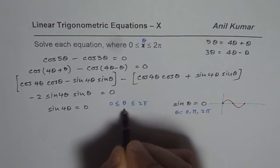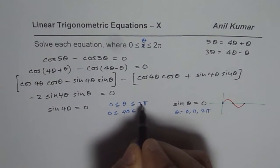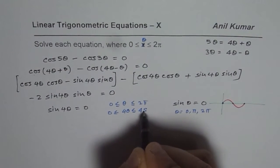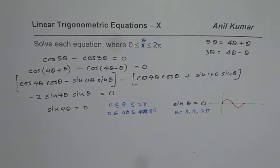So 4θ will be between 0 to 8π. You have to multiply by 4 so you get 8π. So it's 4 cycles.